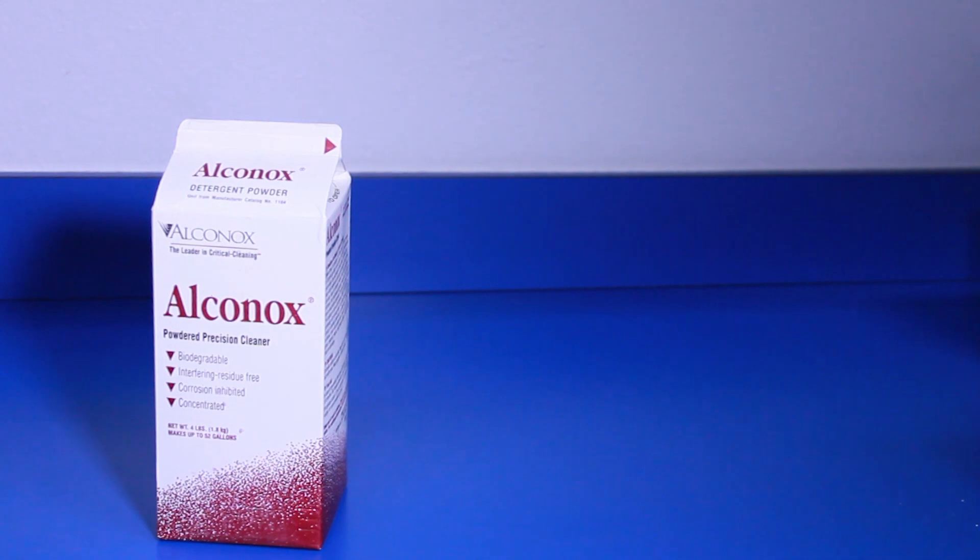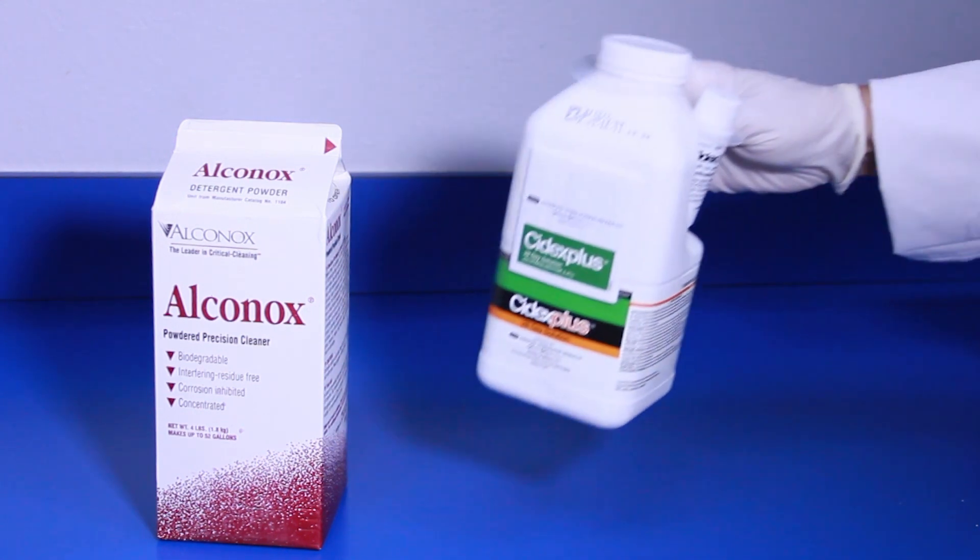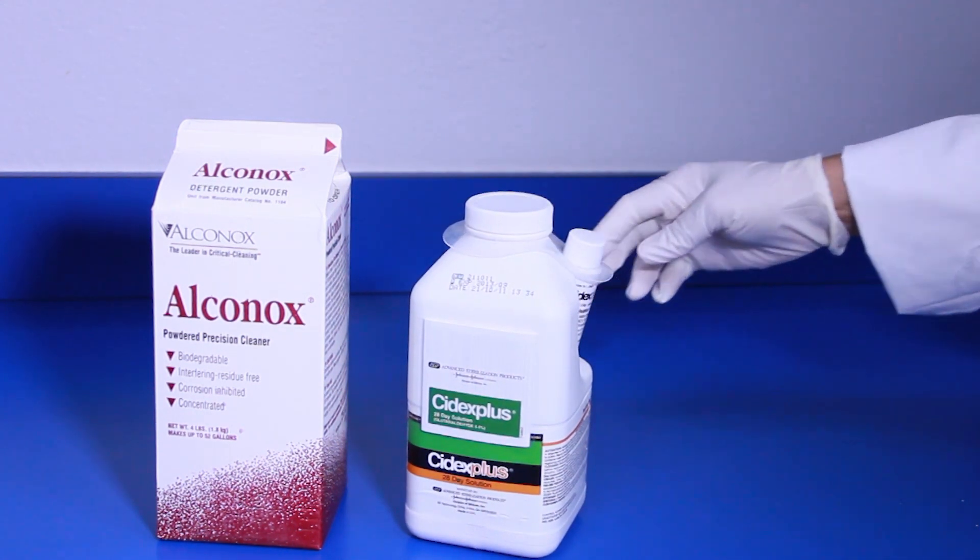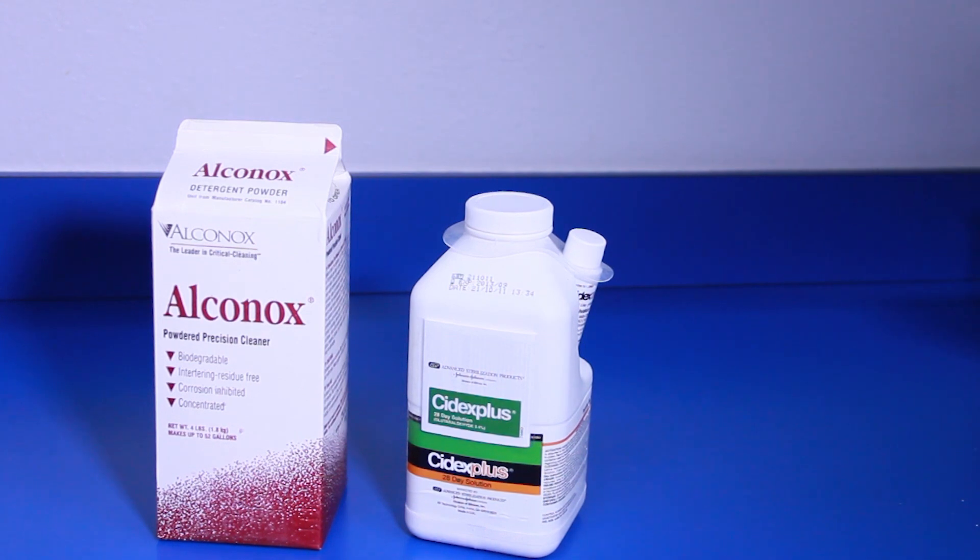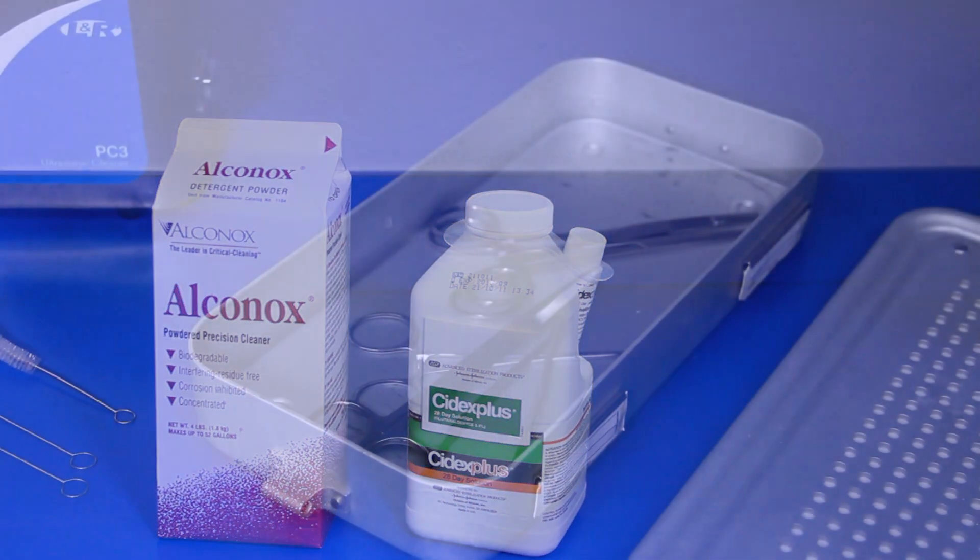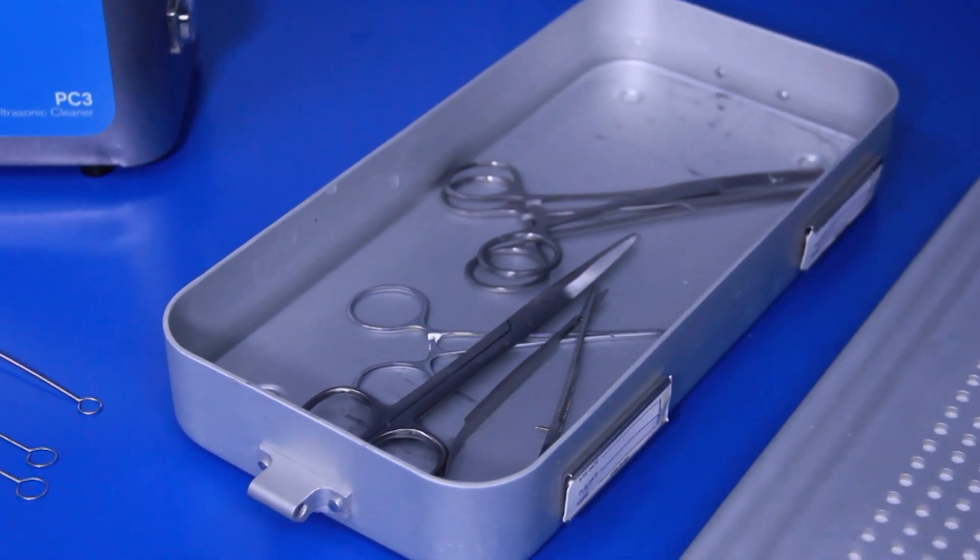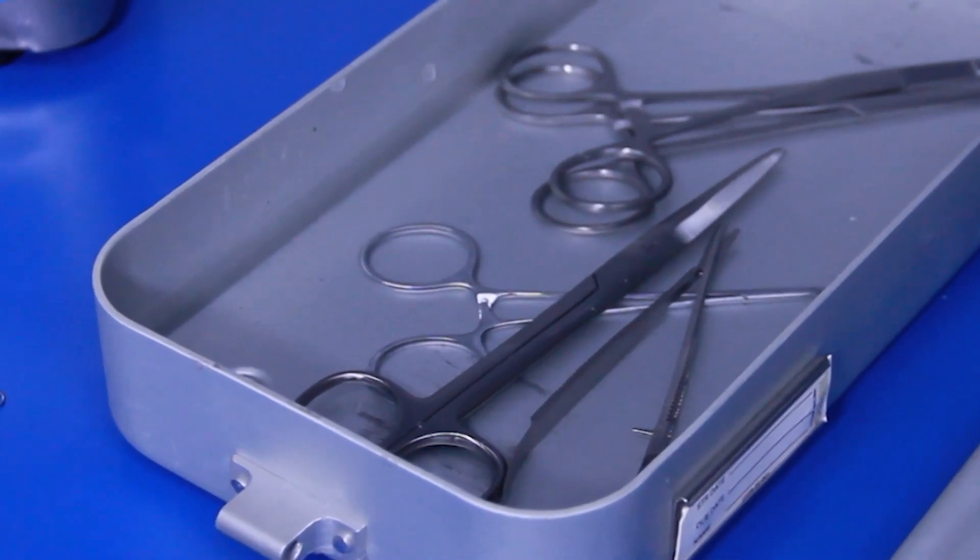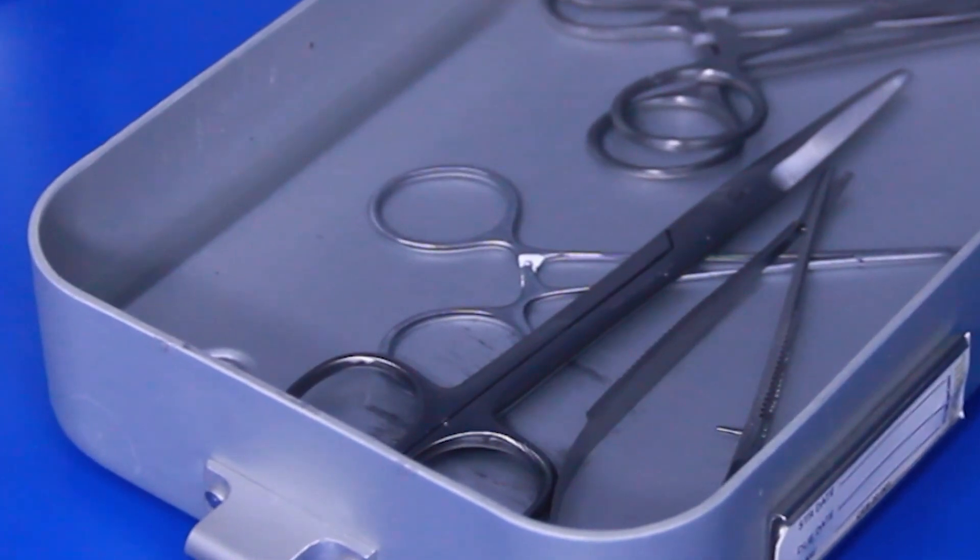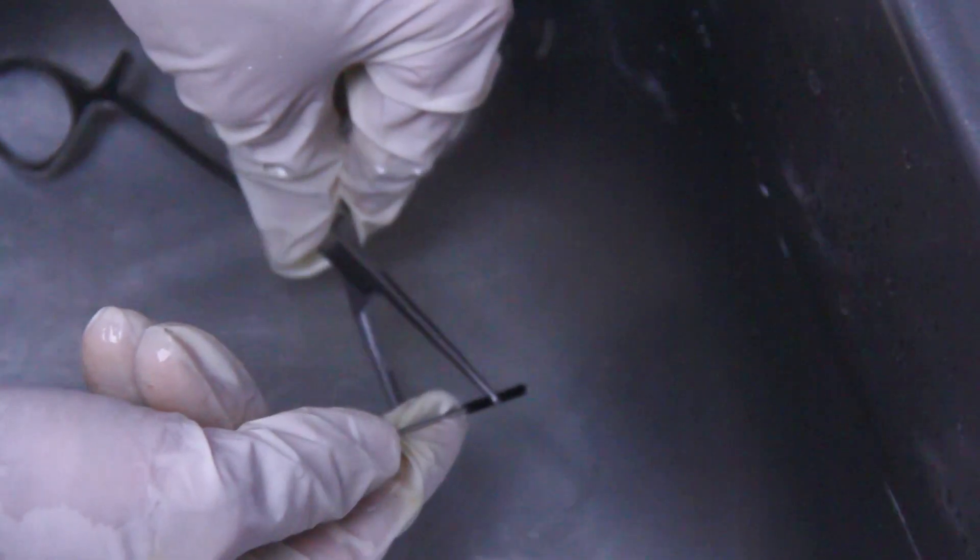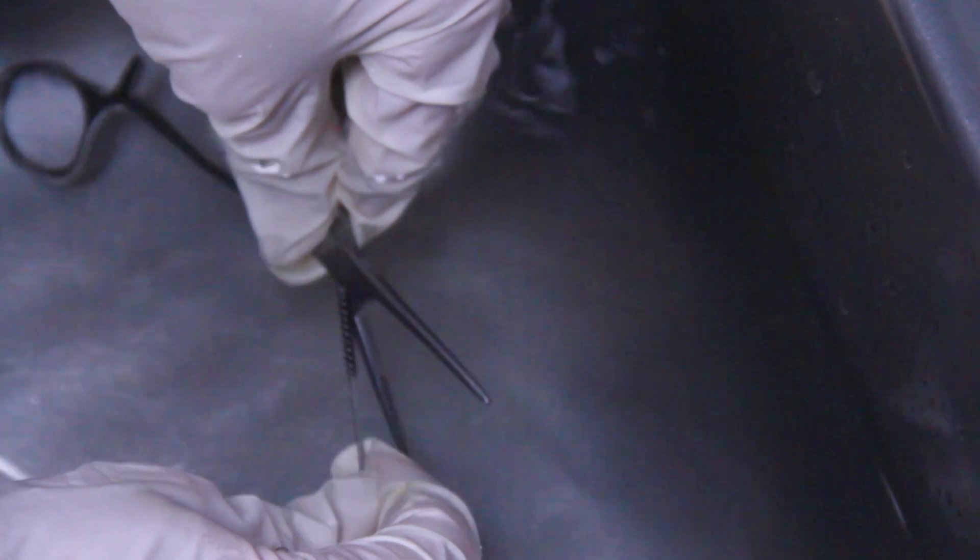If the instruments are not rinsed properly, low pH detergents may break down the stainless protective surface and cause black staining. High pH detergents may cause surface deposits of brown stains, which can interfere with the smooth operation of the instrument.